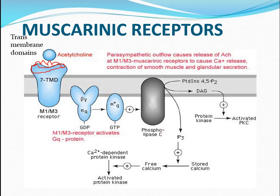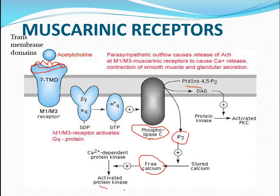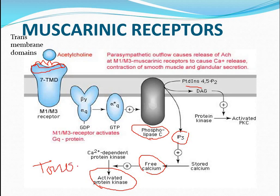The conversion of GDP to GTP leads to activation of phospholipase C enzyme. Activation of phospholipase C converts phosphoinositides into inositol triphosphate (IP3) and diacylglycerol (DAG). DAG activates protein kinase, while IP3 helps release calcium from internal stores, leading to calcium-dependent protein kinase activity and the muscle maintaining its own tone.